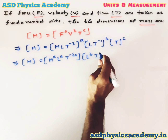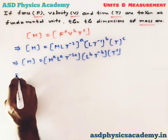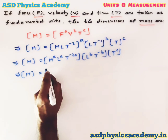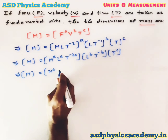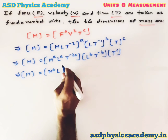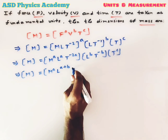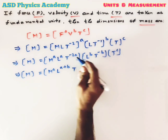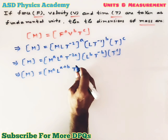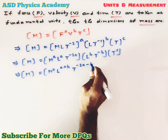Now combining these, M equals M to the power A, L to the power (A + B), and for the time terms: T to the power −2A from force, T to the power −B from velocity, and T to the power C from time. Combined, the power of T is (−2A − B + C).